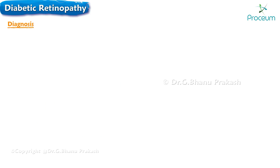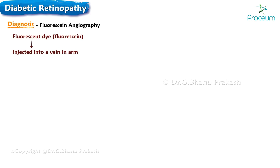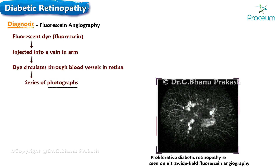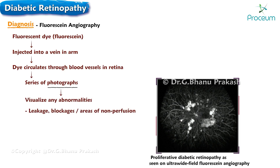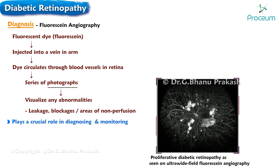Next, we'll talk about the diagnosis of diabetic retinopathy. Fluorescent angiography involves the use of fluorescein dye, which is injected into a vein in the arm. The dye travels through the bloodstream into the retinal blood vessels, and a series of photographs are taken to capture its progression. These photographs provide detailed information about blood flow in the retina, helping to identify abnormalities such as leakage, blockages, and areas of non-perfusion.